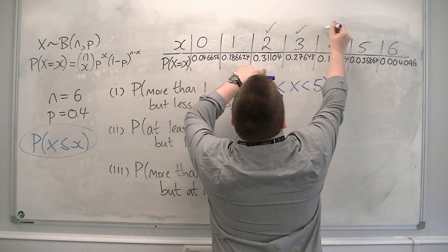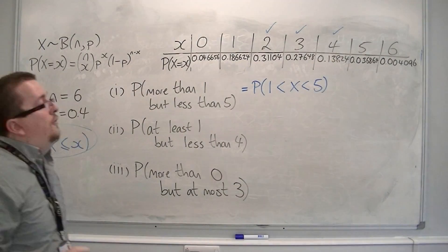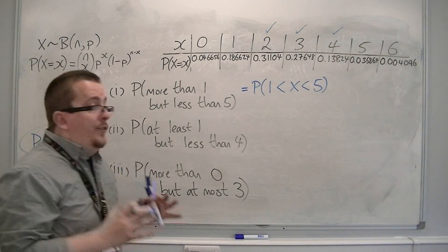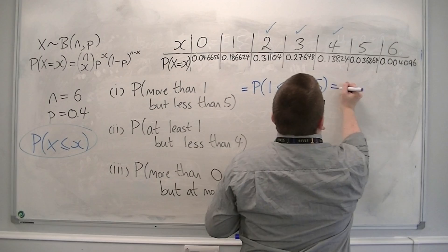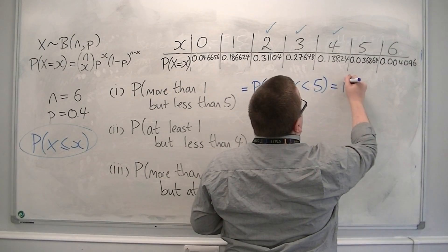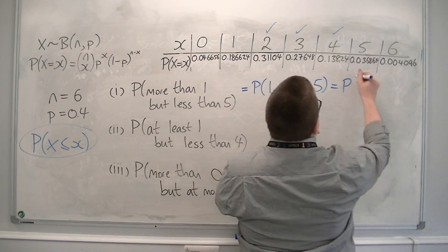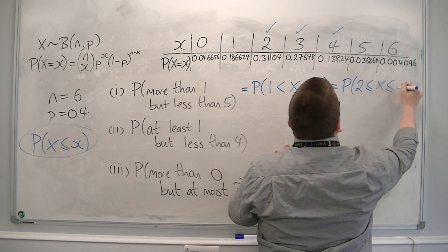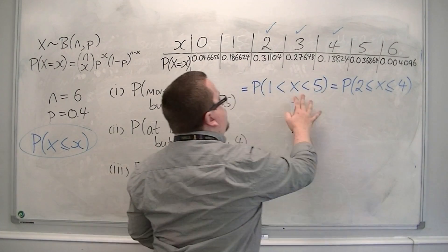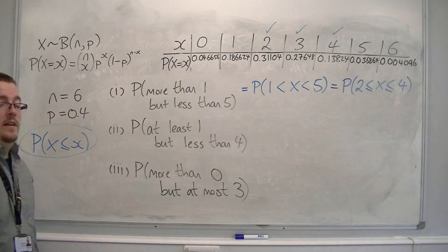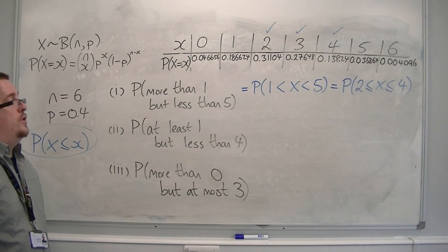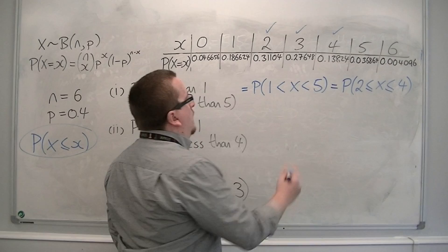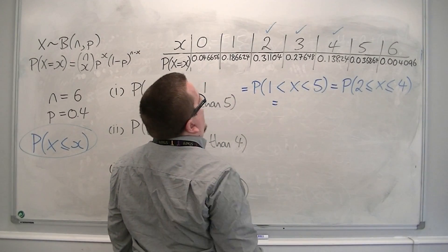So these are the ones that I want: two, three, and four. And so I can work that out by saying, well, that's the probability of two is less than or equal to x is less than or equal to four. These probabilities mean the same thing for this binomial distribution. So how can I calculate it?